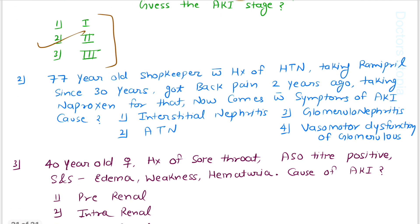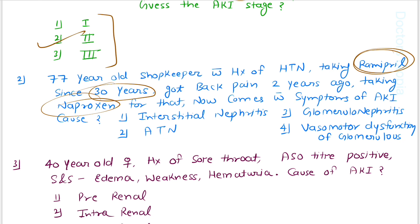Second question: a 77-year-old with hypertension taking ramipril for 30 years and naproxen for back pain for two years now presents with symptoms of AKI. What is the cause? Since the patient is taking ramipril — an ACE inhibitor — and naproxen — an NSAID — for a long time, this is vasomotor dysfunction of the glomerulus, a pre-renal cause.